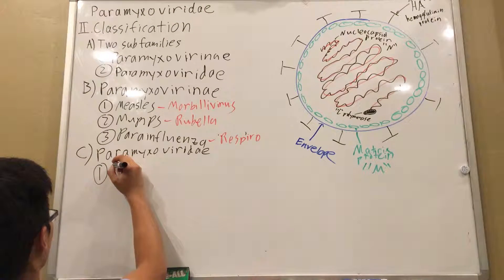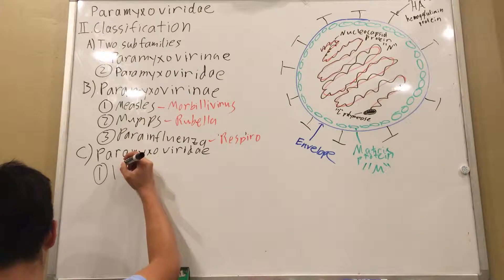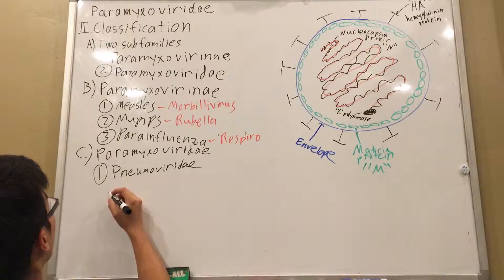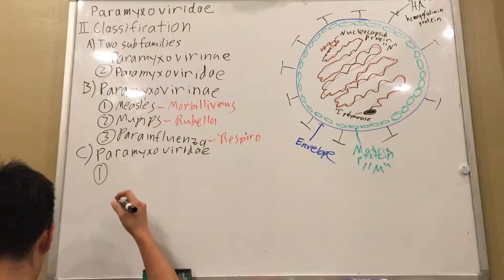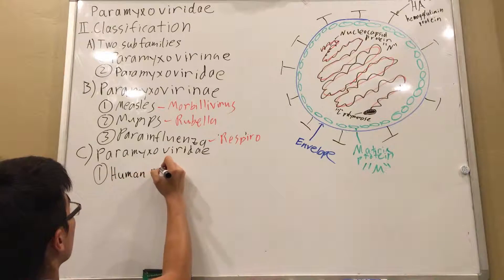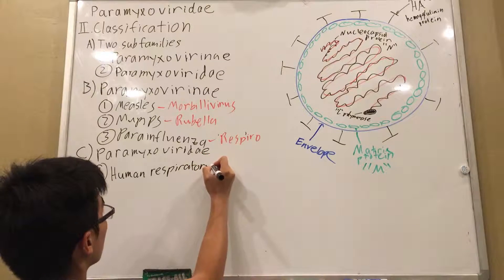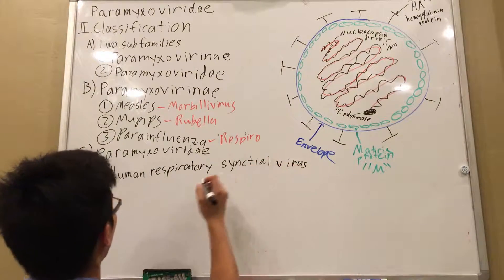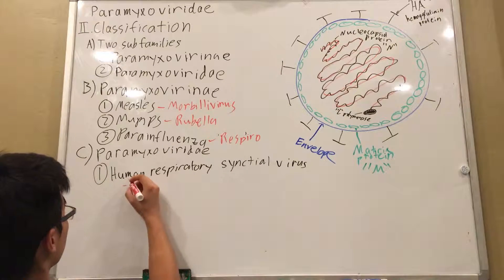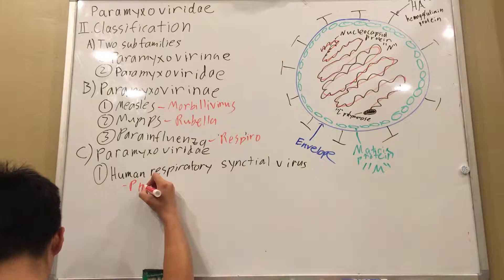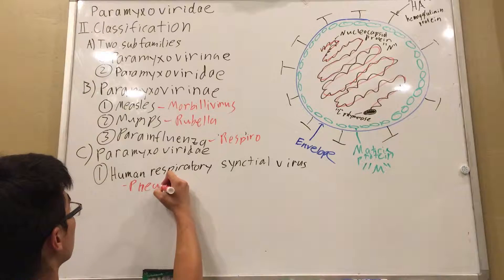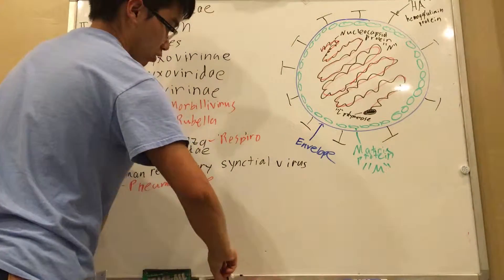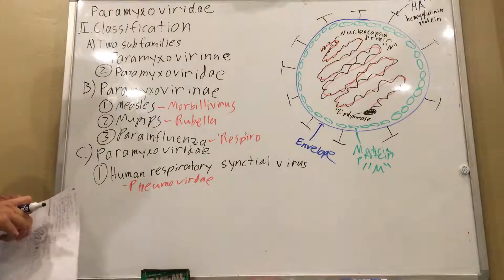So Paramyxoviridae though. This is the one subgroup that Dr. Sian went over, which is Pneumoviridae. So for human respiratory syncytial virus, that is a part of the Pneumoviridae. Pneumoviridae means virus of the lung. I don't know what the symptoms of this are, but I'm guessing that bad stuff happens to your lungs.